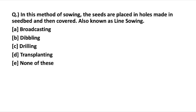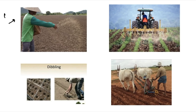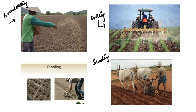Moving on: in this method of sowing, seeds are placed in holes made in the seedbed and then covered. There are different methods of sowing I'll discuss. The methods are: broadcasting, dibbling, drilling, and seeds dropping behind the plow. Broadcasting, as you can see in the picture, is the process of random scattering of seeds on the surface of the seedbed. It can be done both mechanically and manually — machines can be used, or a person can do it manually as shown.